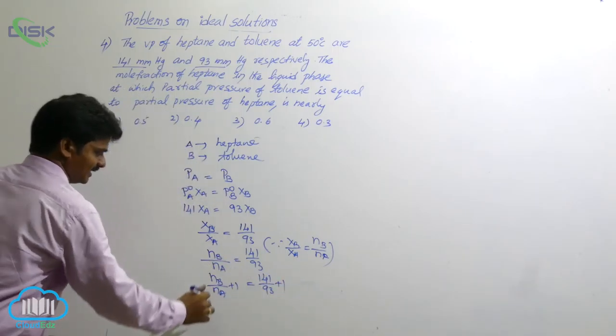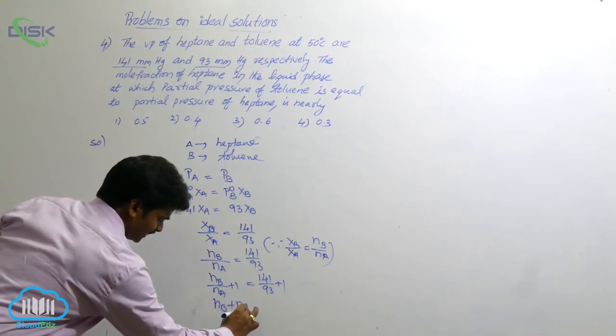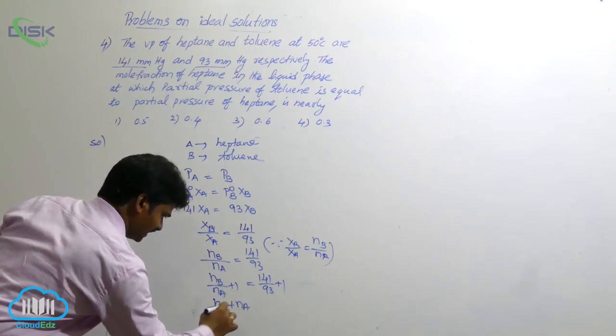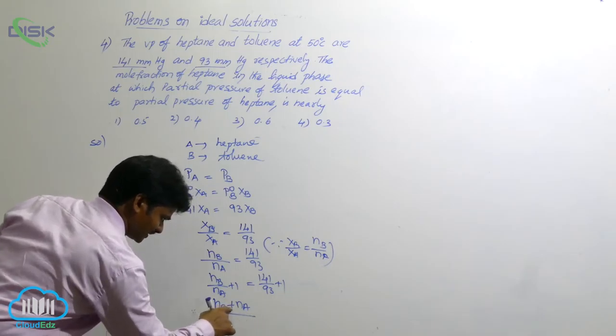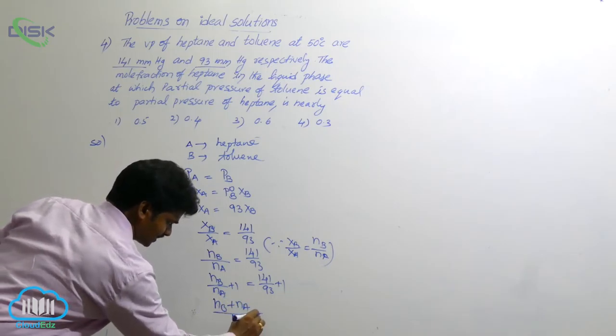Its value is NB by NA, NB plus NA by NA, that's it.